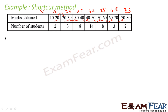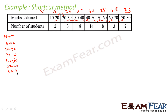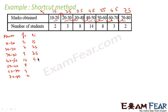Let me draw the table. The class intervals are 10–20, 20–30, 30–40, 40–50, 50–60, 60–70, 70–80. The frequencies are 2, 3, 8, 14, 8, 3, 2. And the midpoints xi are: 15, 25, 35, 45, 55, 65, 75. The next step is to find d.